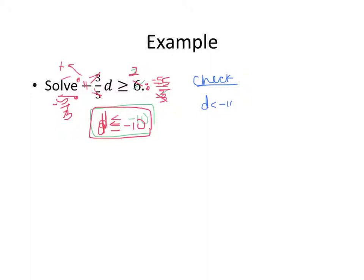Keep in mind you need to do whatever your directions ask. If it says check, remember that you always check 3 cases: a less than case — so a number less than negative 10 — an equal to negative 10, and a greater than negative 10 case. I'm going to check negative 15, negative 10, and 0. Remember, you check in the original inequality.